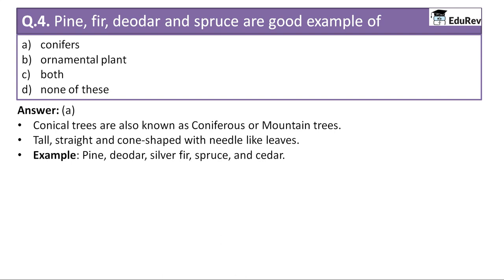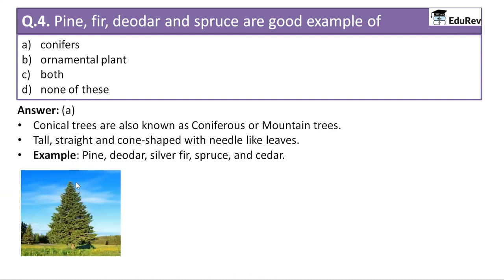This was discussed in the earlier question — that tall, straight, and cone-shaped with needle-like leaves are found in mountains. In this question we also learned that conical trees are known as coniferous. The word conical resembles the word coniferous — C-O-N-I — and this means mountain trees. You can see a pine tree here: tall, straight, cone-shaped, and with needle-like leaves.